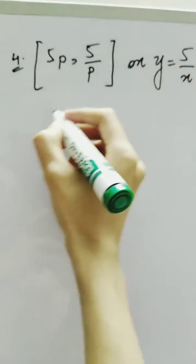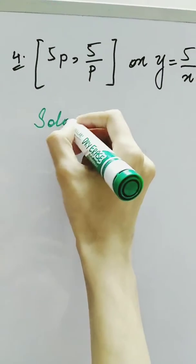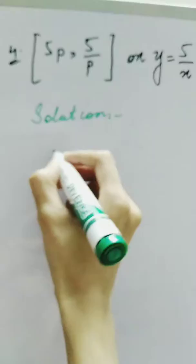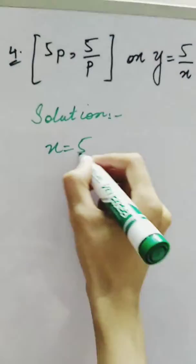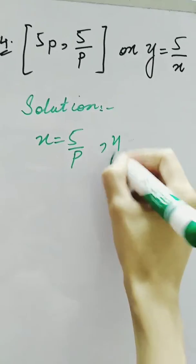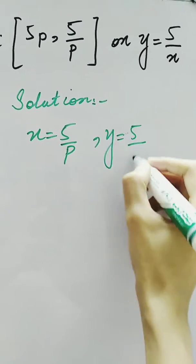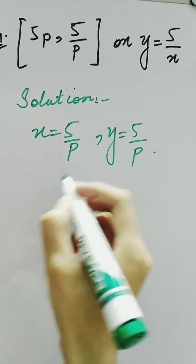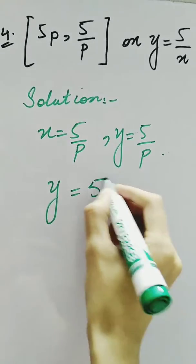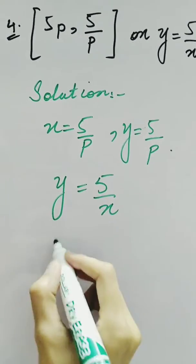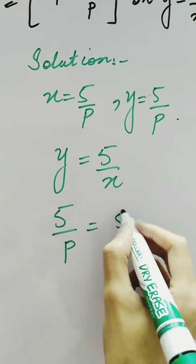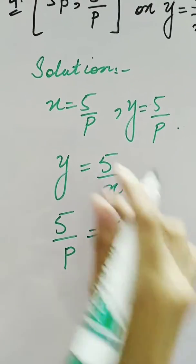Look at another question in which the coordinates are given as (5p, 5/p), where 5p is the x coordinate and 5/p is the y coordinate. We have to put these values in the given equation which is y = 5/x. Here, y = 5/p and x = 5p.